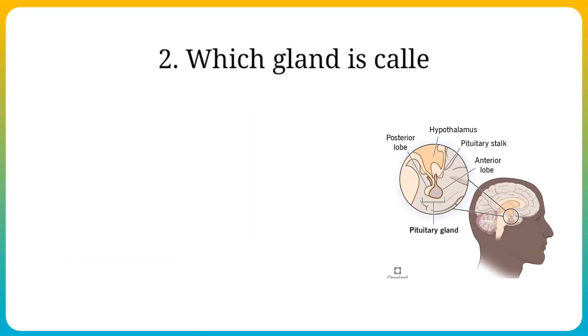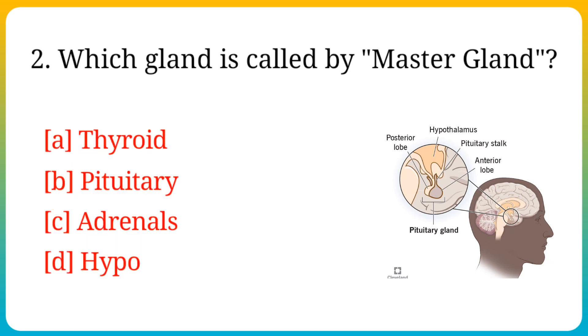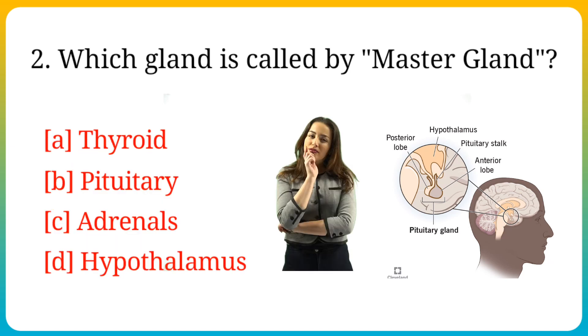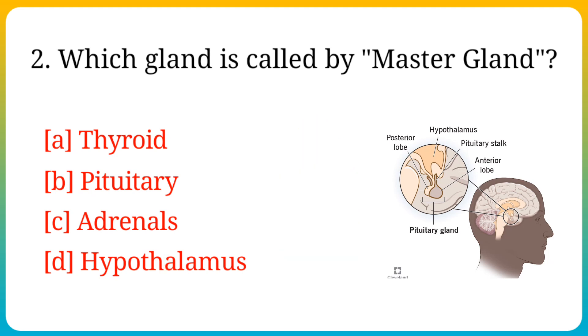Question number 2. Which gland is called by Master gland? Options are: A. Thyroid, B. Pituitary, C. Adrenals, D. Hypothalamus. Answer is option B. Pituitary.